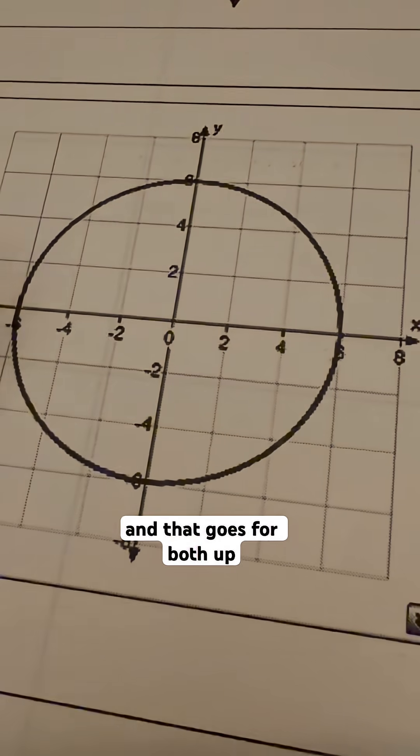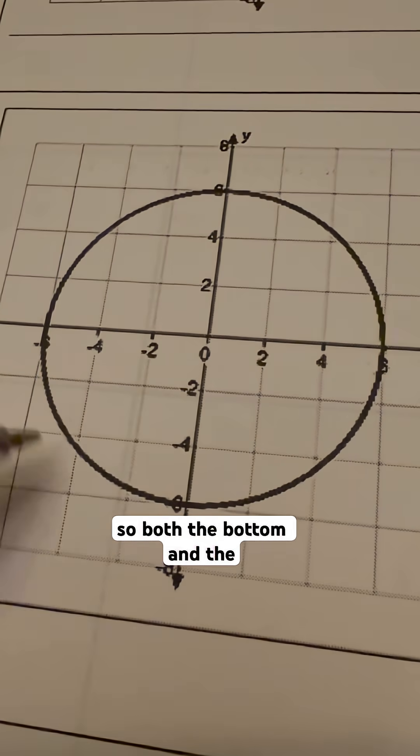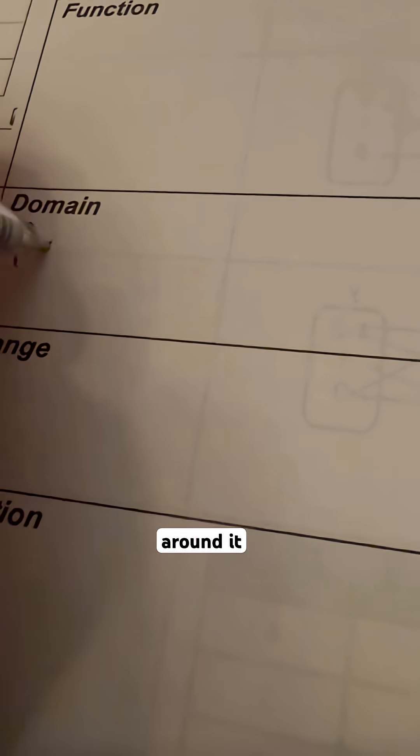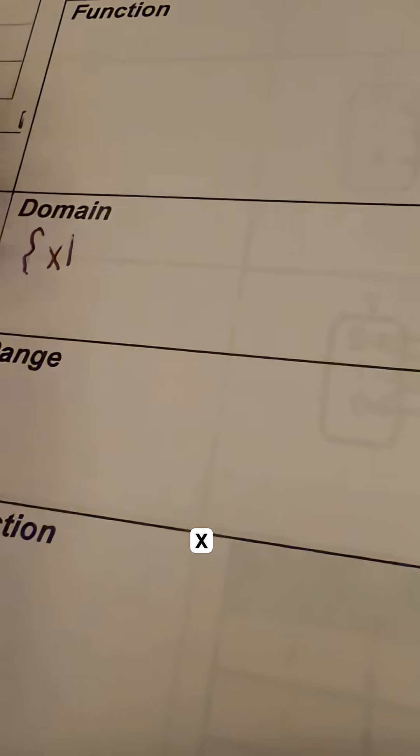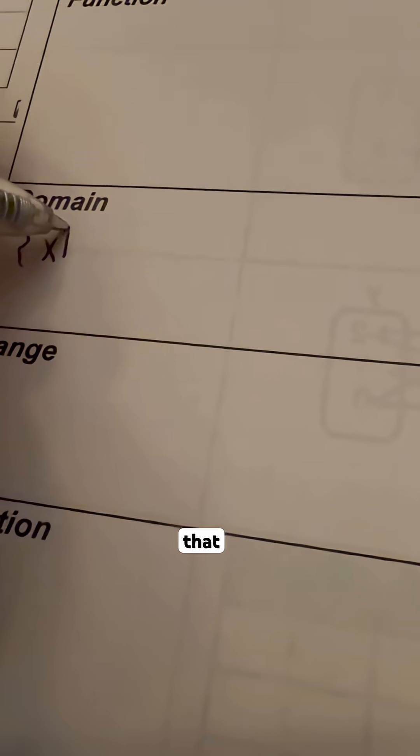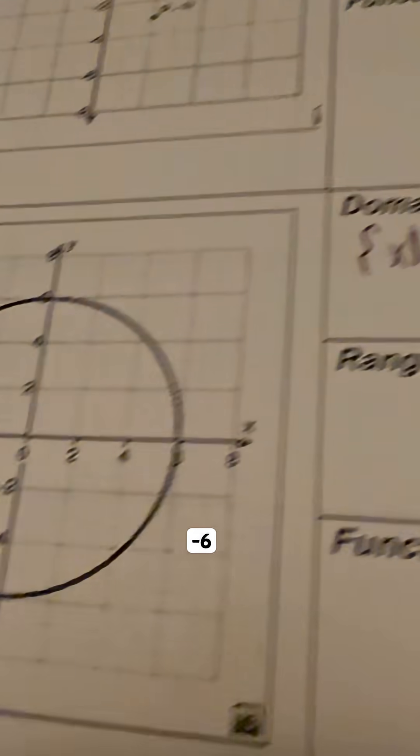So when we write something like that, that goes for both up and down, so both the bottom and the top of this. We're going to write our statement for our domain with some curly brackets around it. And we're going to say that x, such that, that's what that means, that line right here, is a lowest number, which is negative 6. So we're going to put negative 6 first.